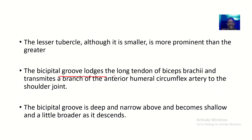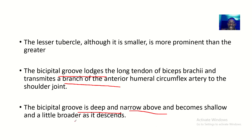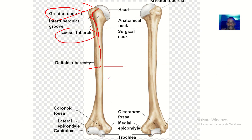The bicipital groove lodges the long tendon of the biceps brachii and transmits a branch of the anterior humeral circumflex artery to the shoulder joint. The bicipital groove is deep and narrow above, and becomes shallow and a little broad as it descends — as you can see in the image, it's very deep up here but becomes more shallow as you go down.